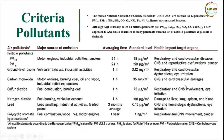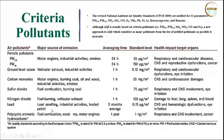Sulfur dioxide comes mainly from fossil fuel burning, particularly coal combustion. It is calculated on an hourly basis with a standard level of 75 micrograms per cubic meter. It causes respiratory issues, central nervous system involvement, and eye irritation, and also contributes to acid rain. Similarly, nitrous oxide from fossil fuel burning and vehicular exhaust has a standard level of 100 micrograms per cubic meter, causes acid rain, and impacts the liver, lungs, spleen, and blood.